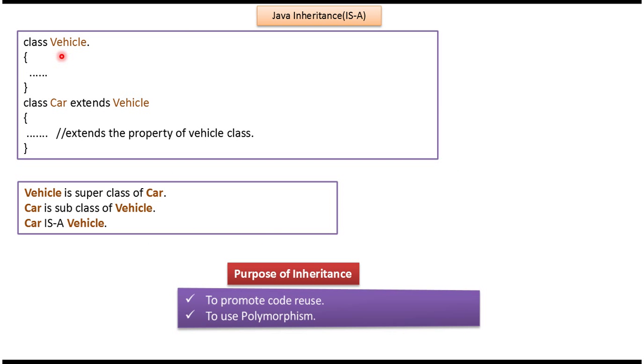Here you can see class Vehicle and class Car extends Vehicle. So class Car is a subclass and class Vehicle is a superclass. Car IS-A Vehicle. The purpose of inheritance is to promote code reuse and to use polymorphism.